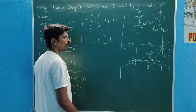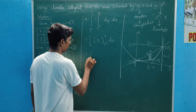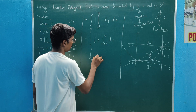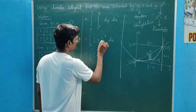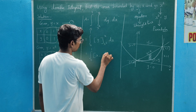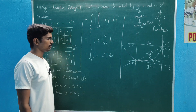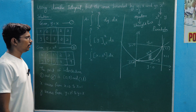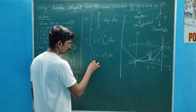The next step is upper limit minus lower limit. Integral from 0 to 1 of (x minus x squared) dx.